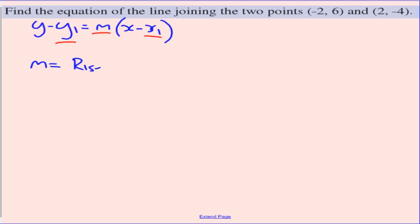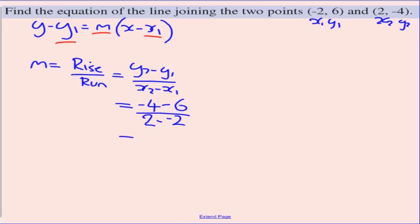Gradient being rise over run, or a more coordinate-friendly version, y2 minus y1 divided by x2 minus x1. I'm going to label this first point as x1, y1, and the second point as x2 and y2. So y2 minus y1 is negative 4 minus 6 divided by x2 being a 2 minus a negative 2. Minus 4 minus 6 is negative 10. 2 minus a negative 2 is 4. Simplifying that down, I have negative 5 over 2. Okay, there's my gradient.